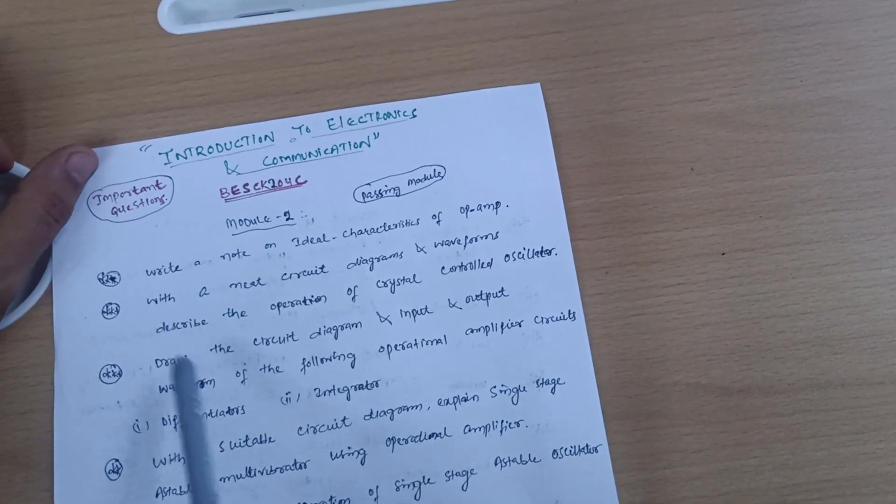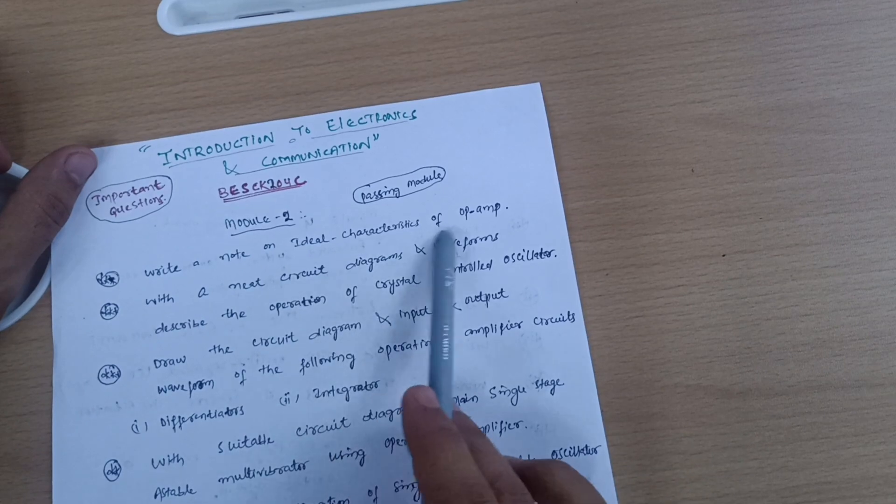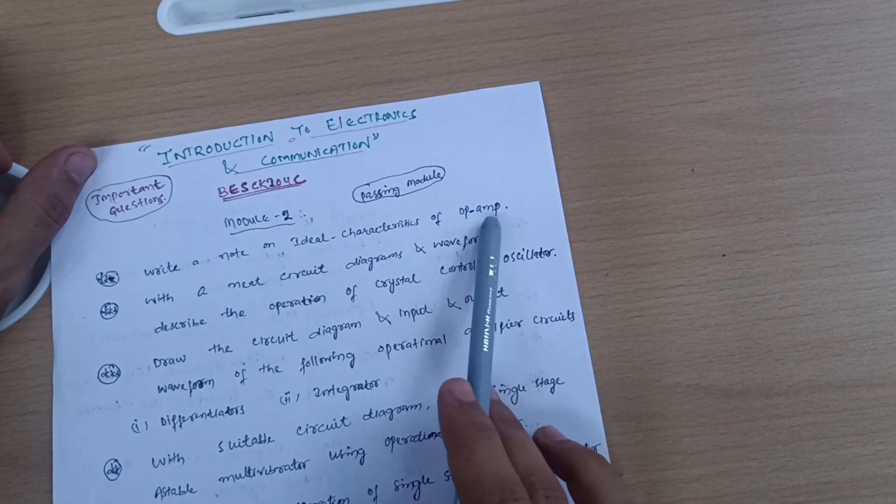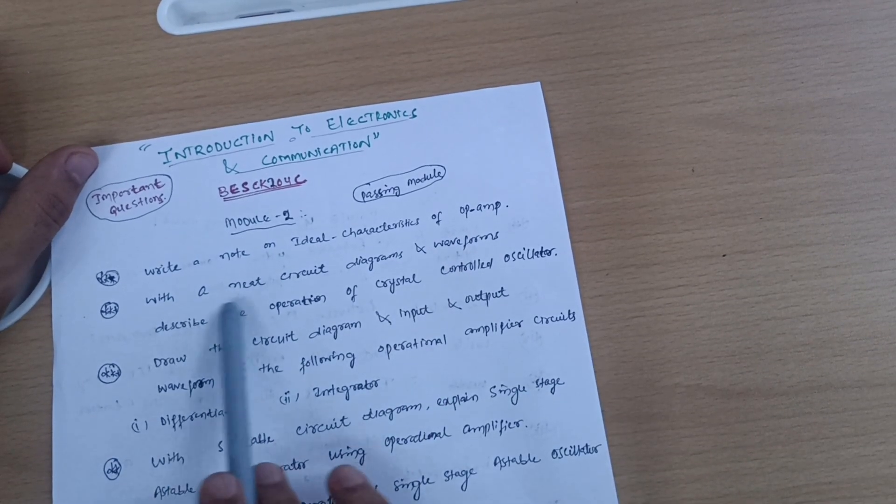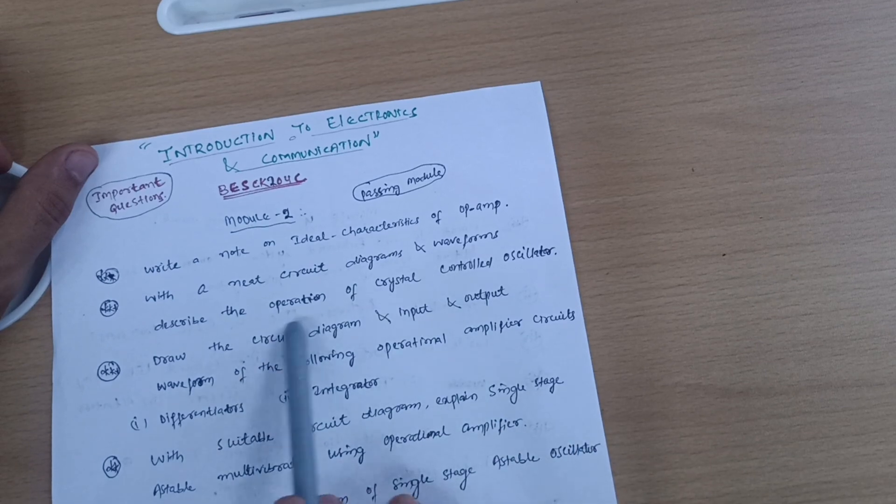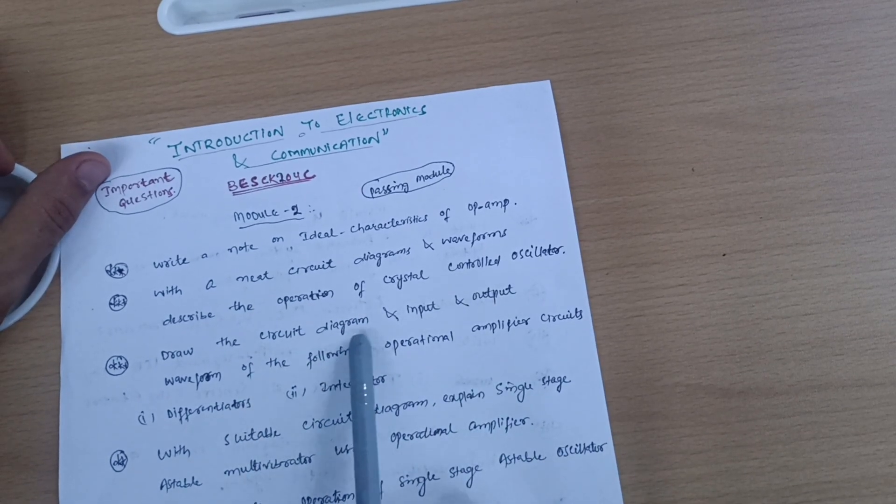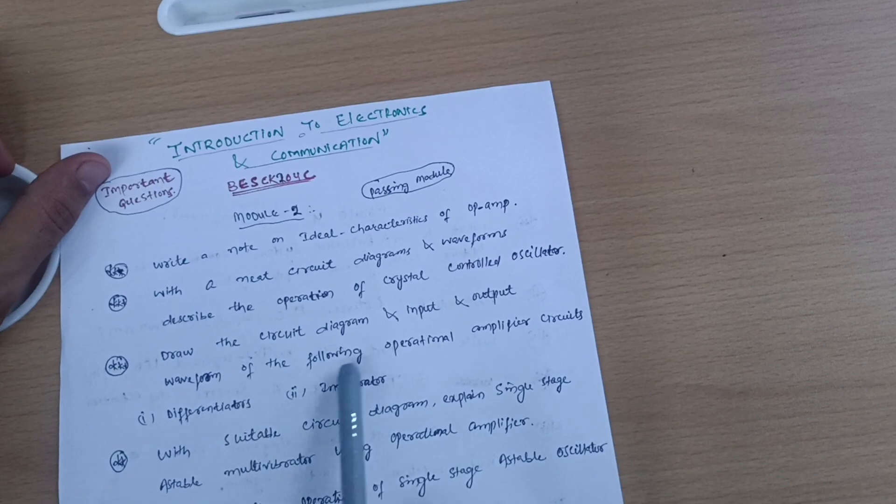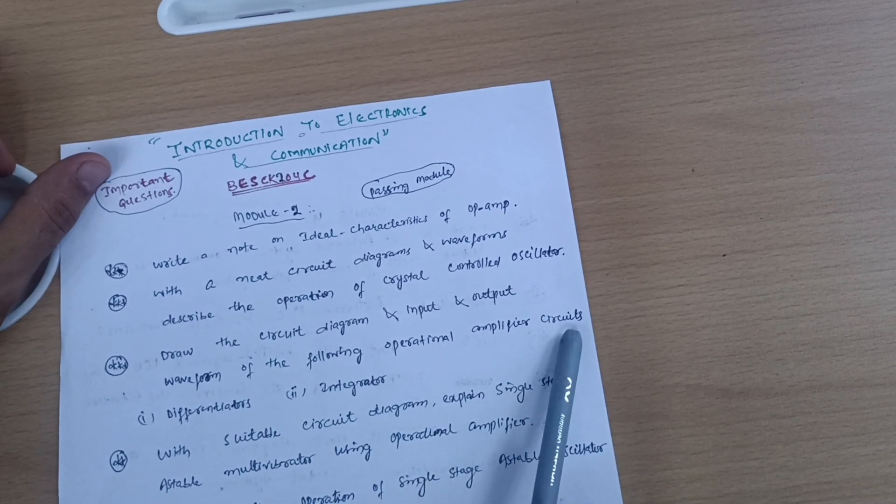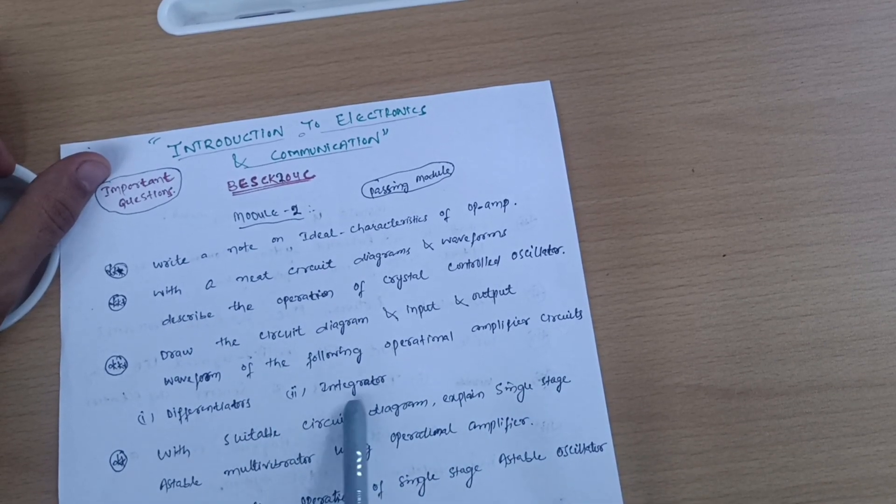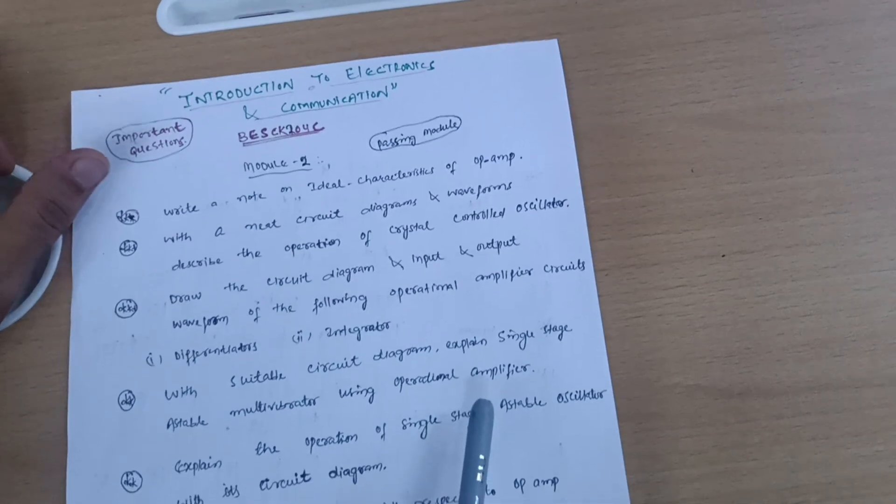In Module 2, cover super important questions like: write a note on ideal characteristics of op-amp with neat circuit diagrams and waveforms; describe the operation of crystal controlled oscillator; and draw the circuit diagram and waveforms for differentiators and integrators.